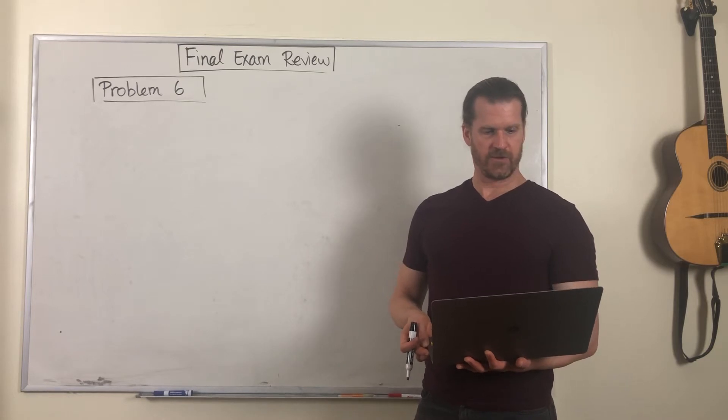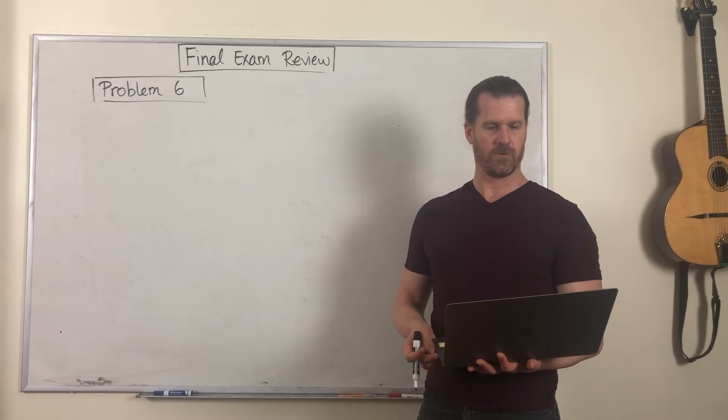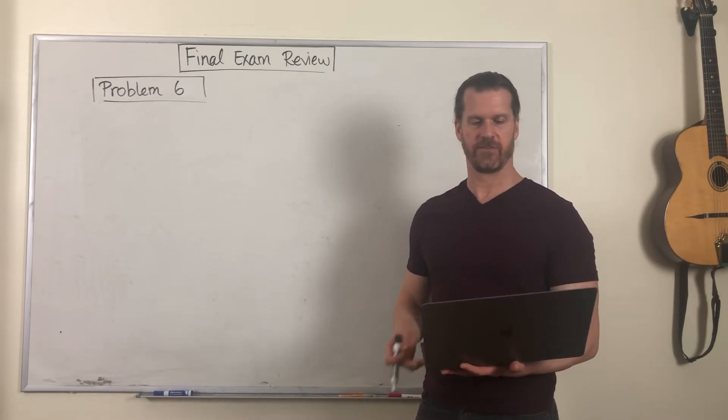If a human centrifuge has a radius of some number, what angular speed gives you 9 G's of centripetal acceleration?